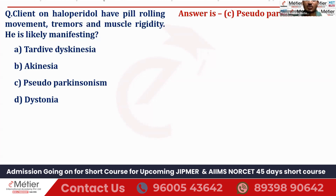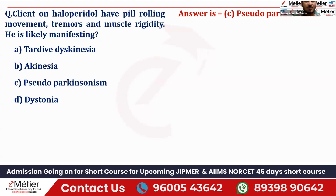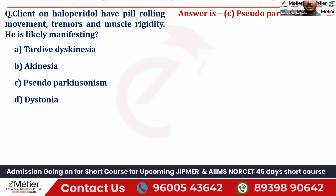Why pseudo-Parkinsonism? The patient is not having Parkinson disease. The patient has a psychiatric disorder — for example, bipolar disorder or schizophrenic disorder — and is taking haloperidol as per the doctor's instruction. Because of taking haloperidol antipsychotic drug, the patient is developing pin-rolling movement, tremors, muscle rigidity — extrapyramidal symptoms. Because of the medication, if the patient is developing these things, it is called pseudo-Parkinsonism. Apart from those signs, mask-like face and shuffling gait are also present.